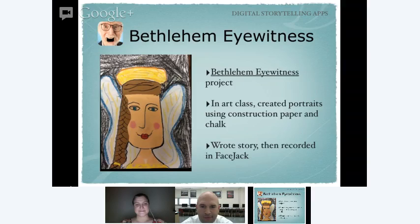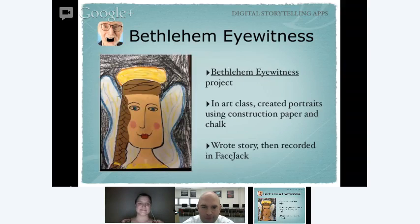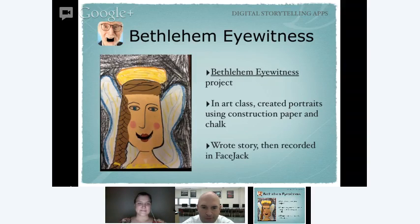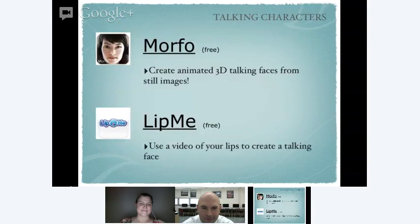Here's another project done at Christmas time with different characters from the Bible story — but you could use book characters for this. Students used construction paper and chalk, made a beautiful portrait, then wrote a narrative where the character talked, and we recorded it in FaceJack. You can hear: 'Hello. I am an angel sent from the Lord. God chose me to go and tell the shepherds that Jesus has come down to earth.' If you want to see more of any of these projects, they're all listed on my Creative Aptitude website.